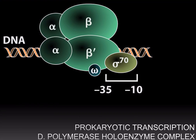The RNA polymerase that carries out transcription in bacteria is in fact not one single protein but a complex of five different proteins, or five different polypeptides, also called subunits. This complex of the five subunits of the RNA polymerase is also called the polymerase holoenzyme complex.